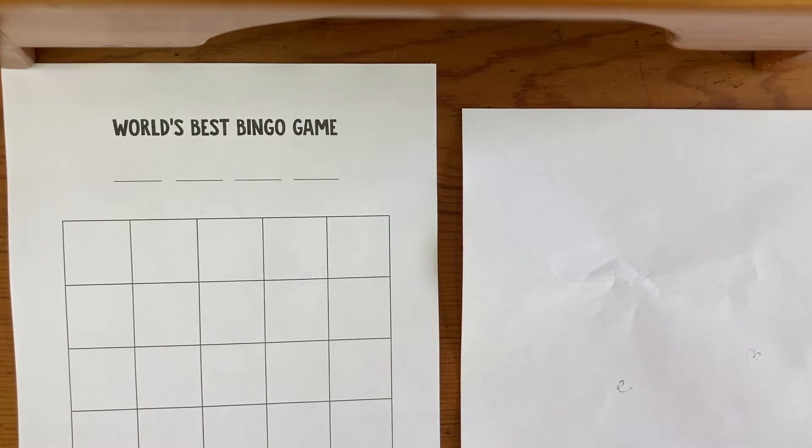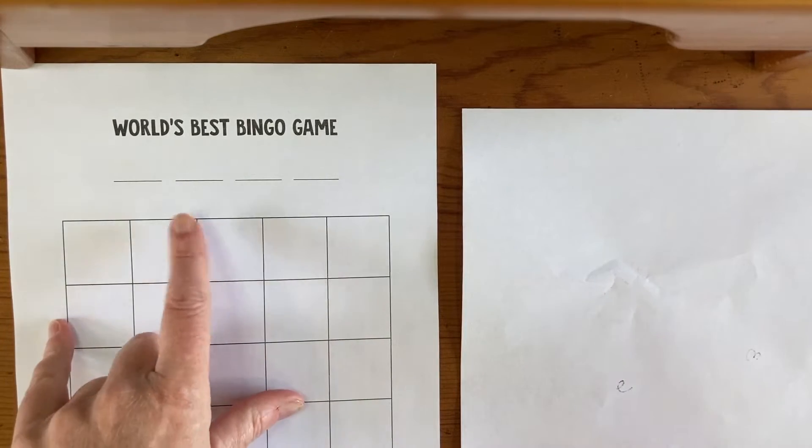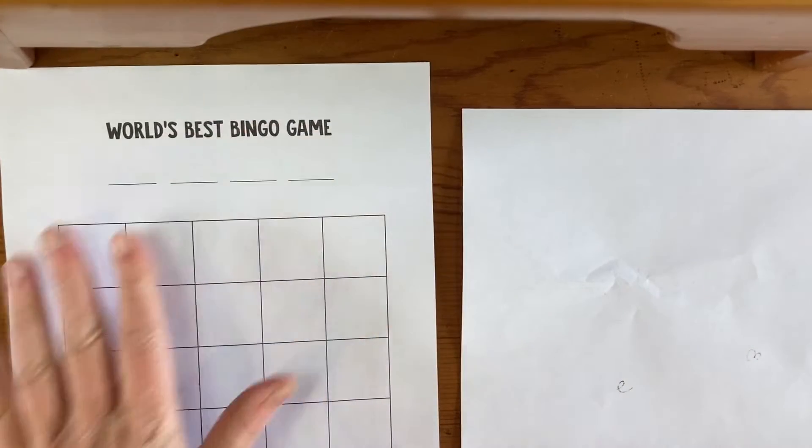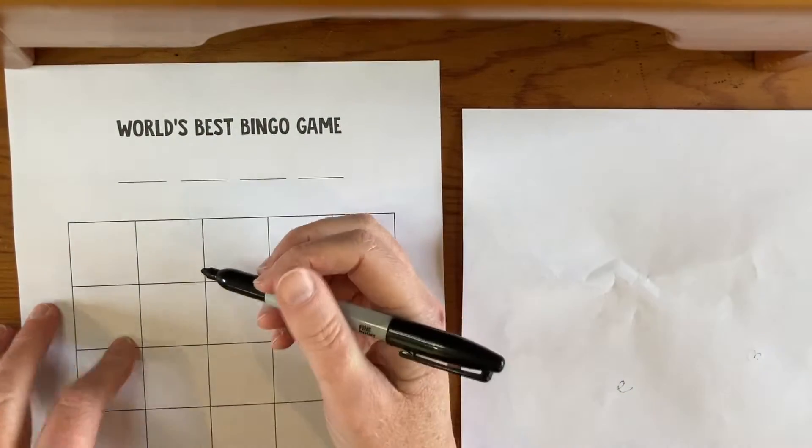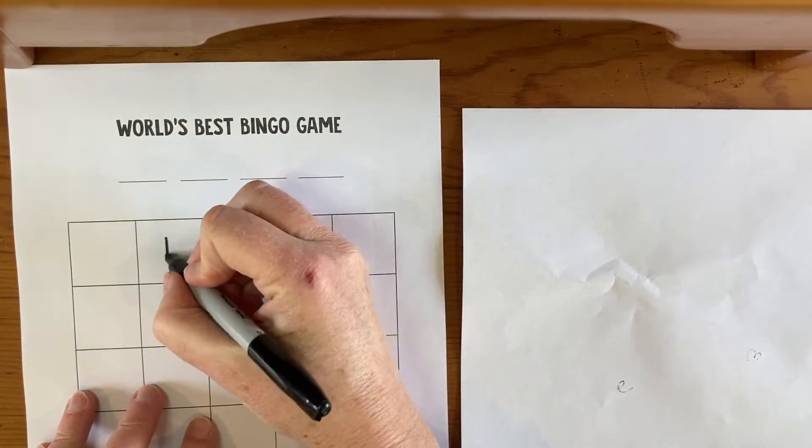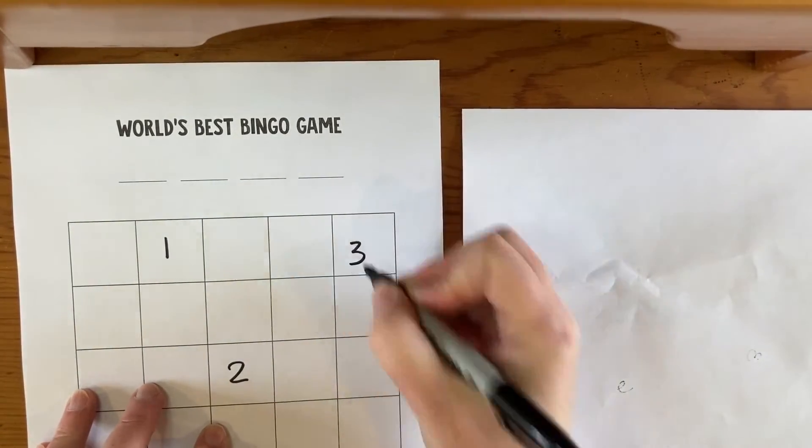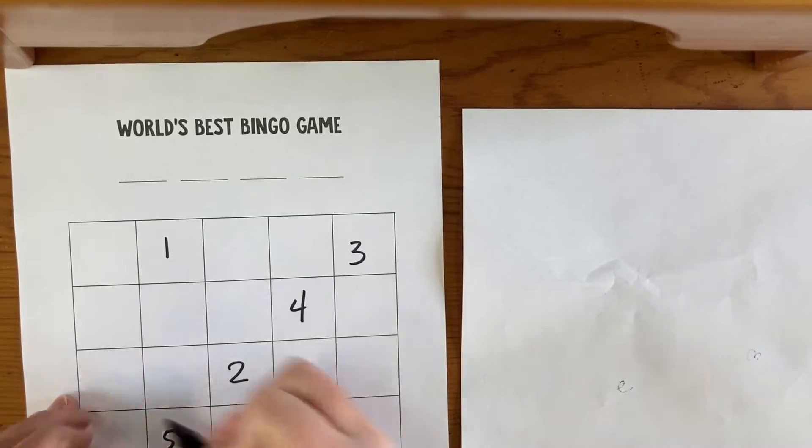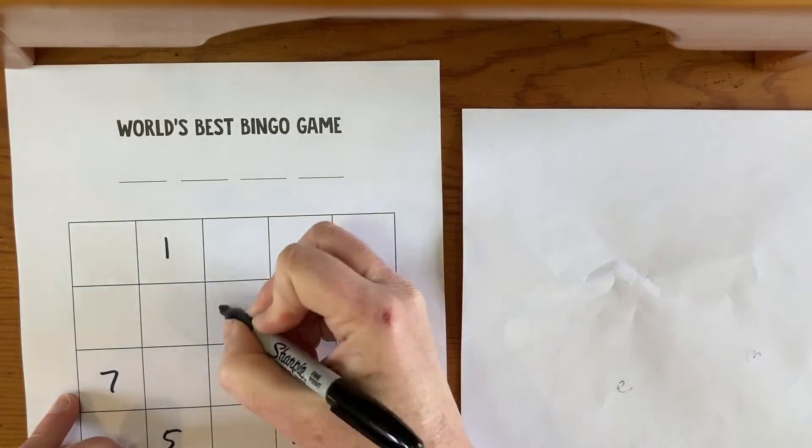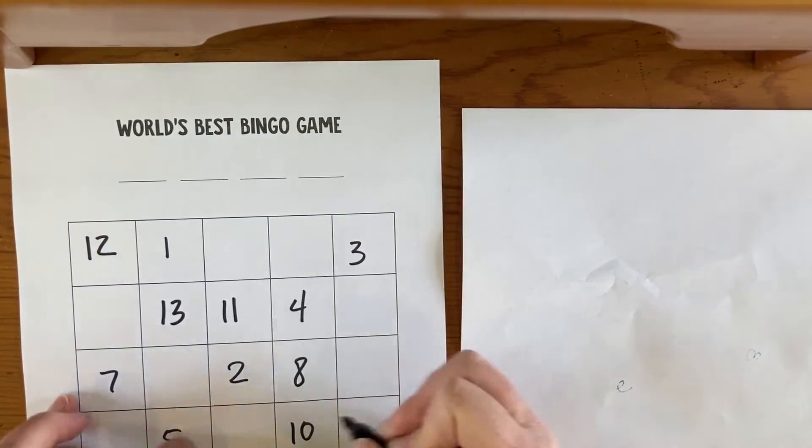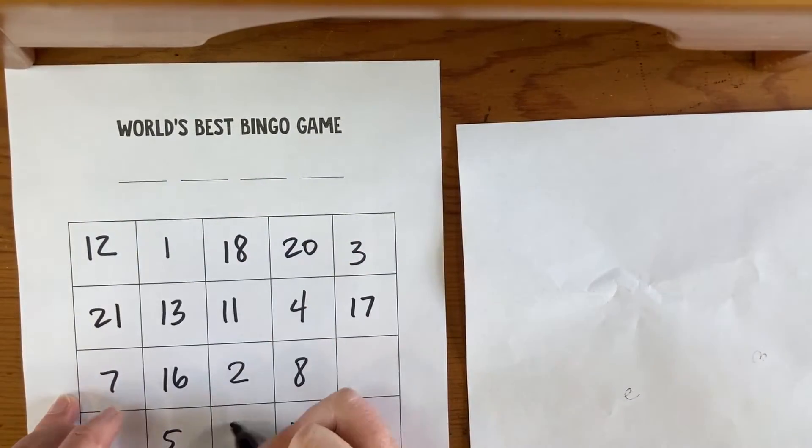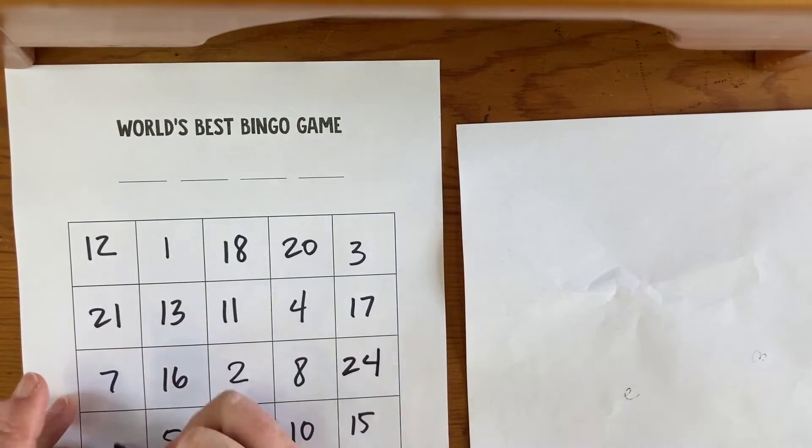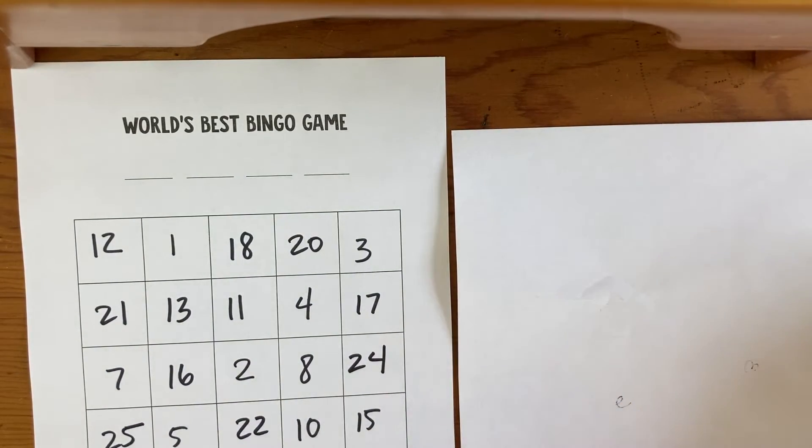Okay, I'm going to show you how to play the world's best bingo game. The first thing you'll do is prepare your bingo board. You'll print out one of these for everybody. We're going to fill in the numbers 1 through 25 in any order in the board.